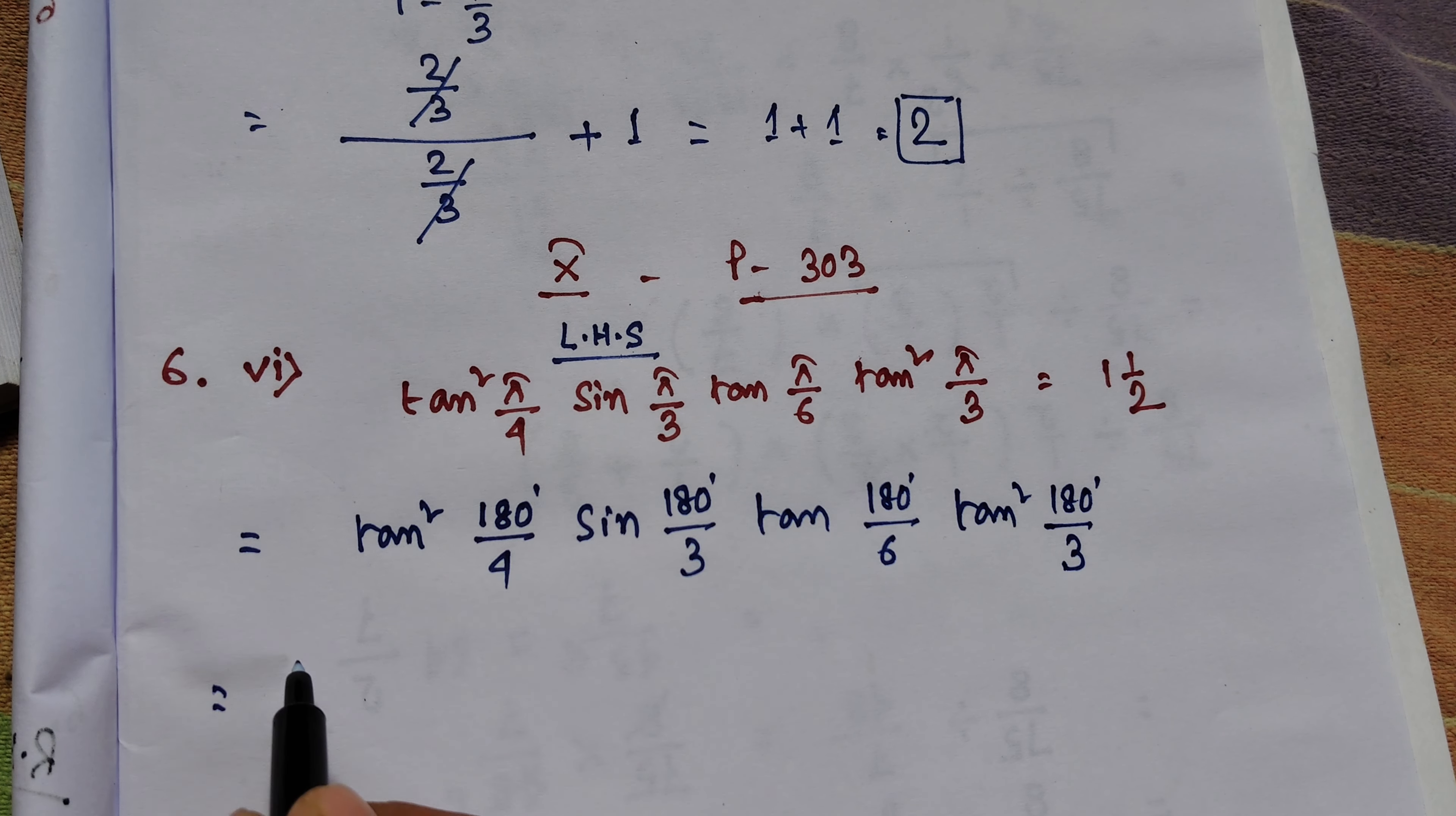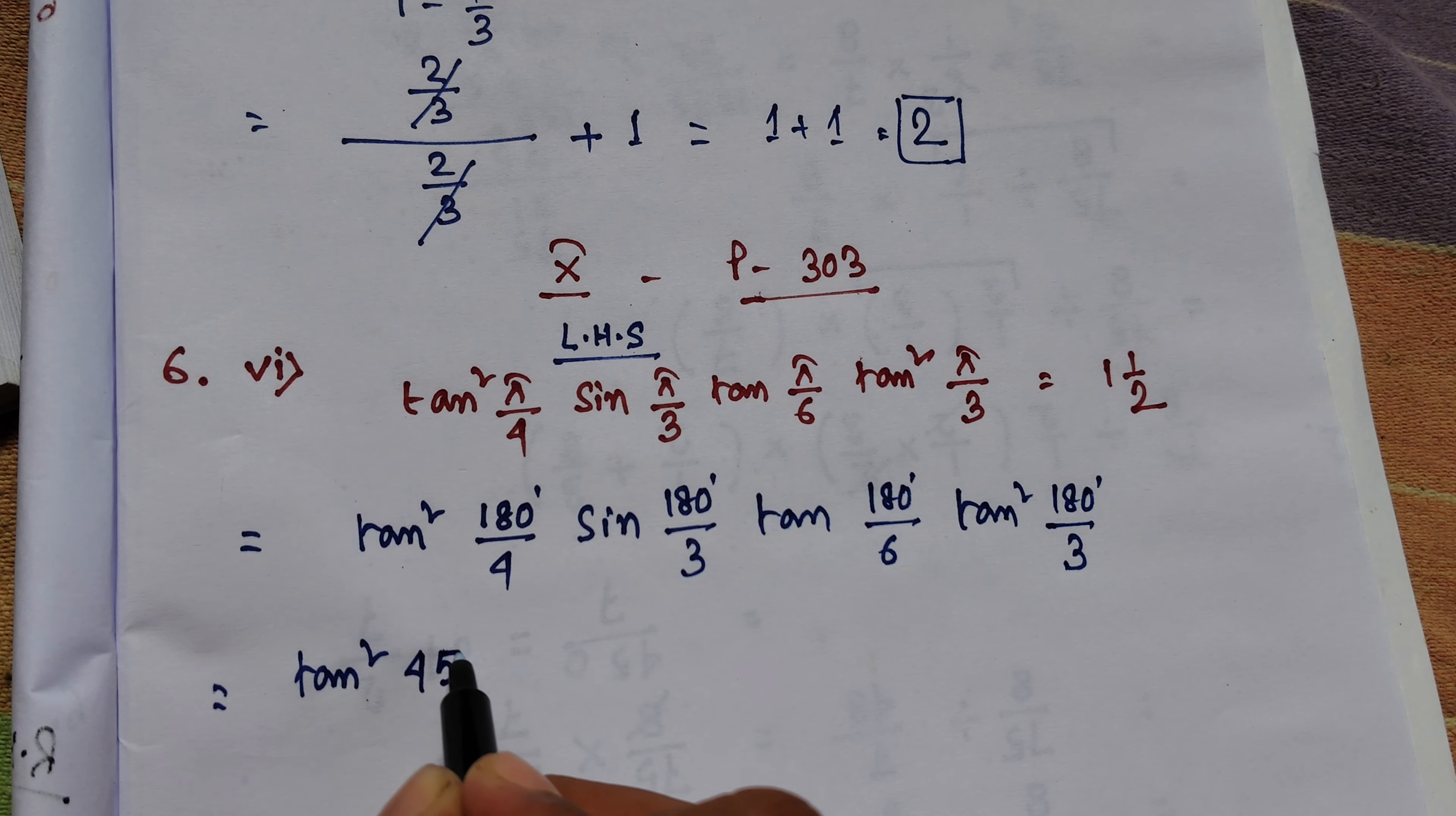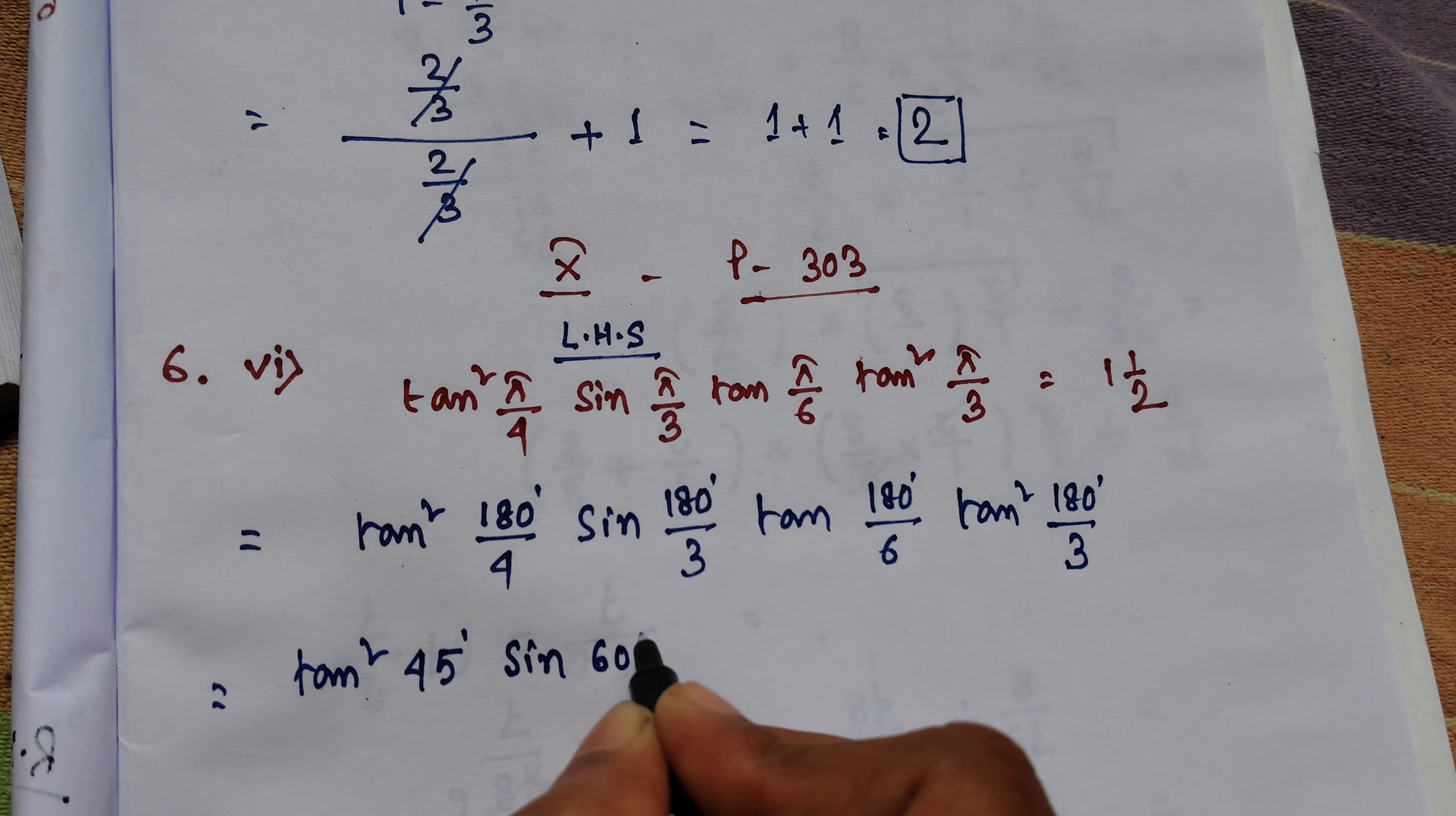This is tan squared. This is 45 degrees. The pi is 180 by 6. This is 60 degrees.